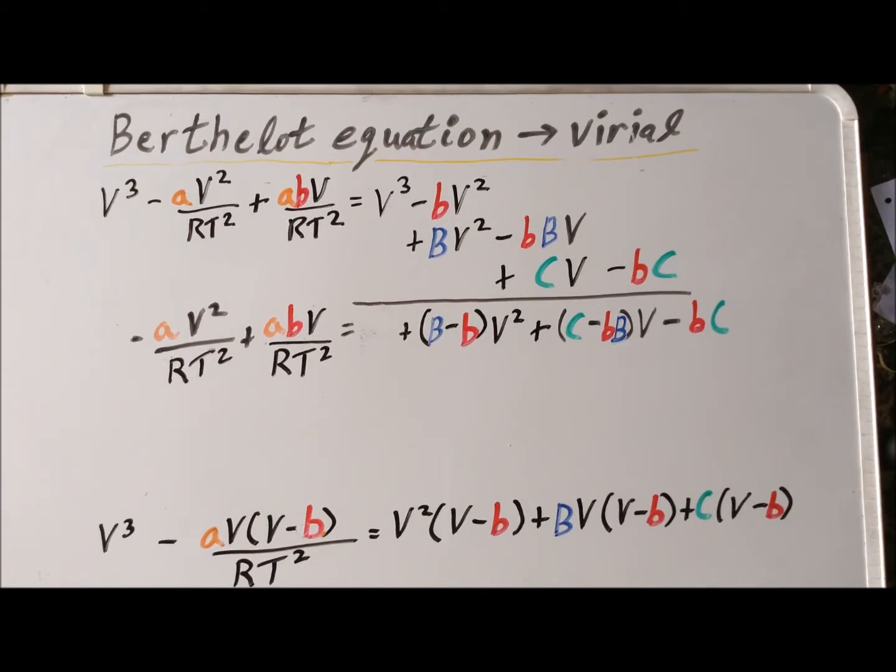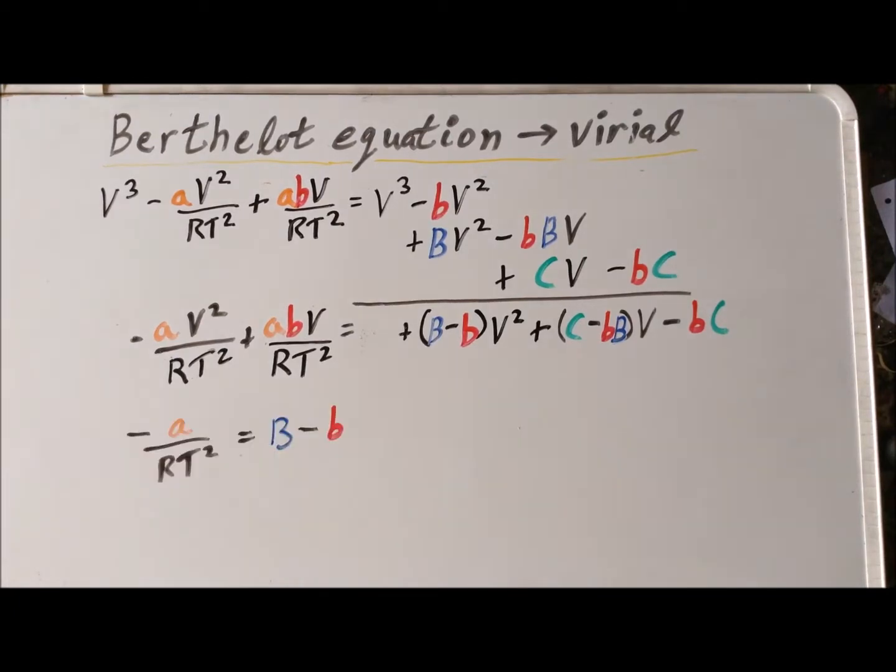The next step is to notice the relevant powers of V squared. So on the left-hand side, the coefficient of V squared is minus A over RT squared. And on the right-hand side, the coefficient is big B minus little B. These must be equal to each other. This means specifically that minus A over RT squared is equal to big B minus little B.